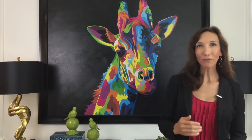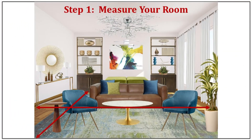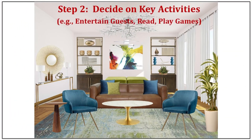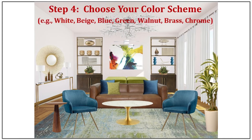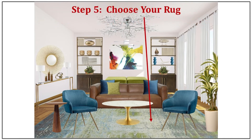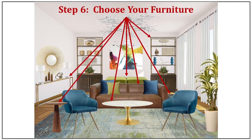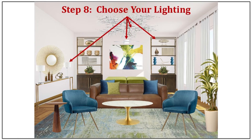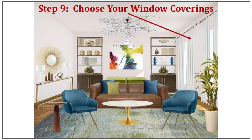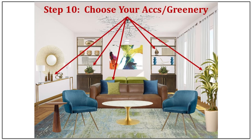You now know how to design pretty much any room in 10 easy steps. As a quick review: step 1, measure your room. Step 2, decide on the key activities. Step 3, choose your style. Step 4, choose your color scheme. Step 5, choose your rug. Step 6, choose your furniture. Step 7, choose your wall art and wall decor. Step 8, choose your lighting. Step 9, choose your window coverings. And step 10, choose your accessories and your greenery.